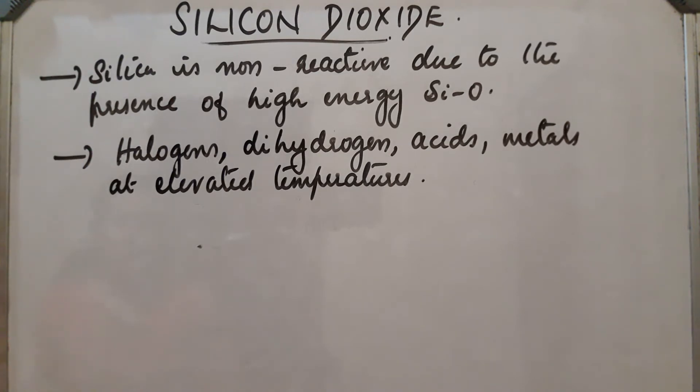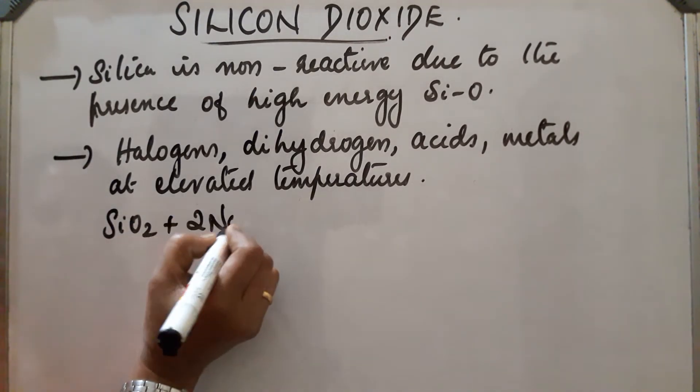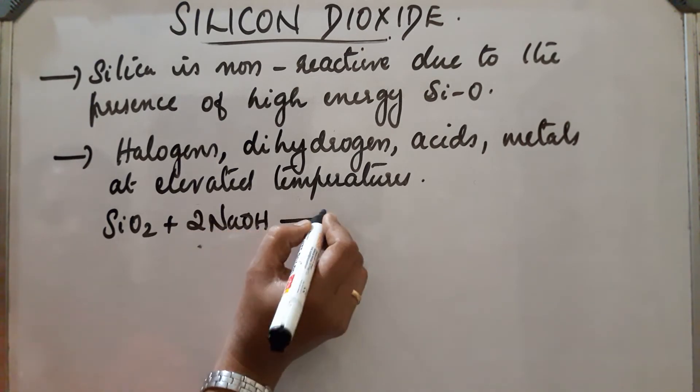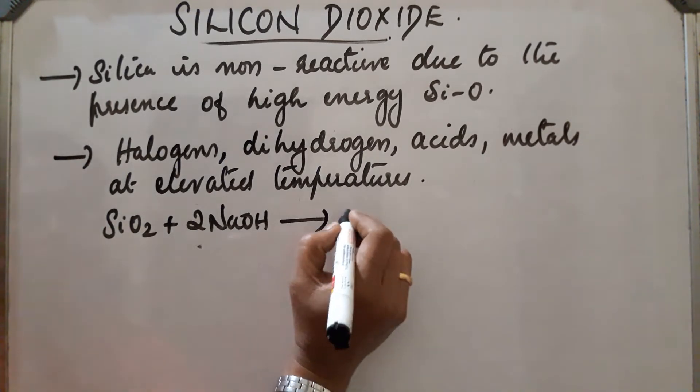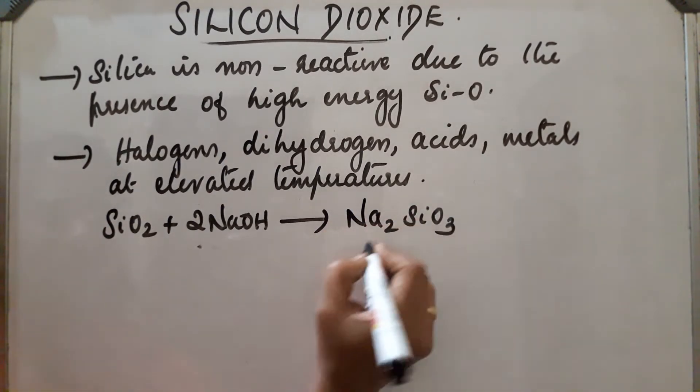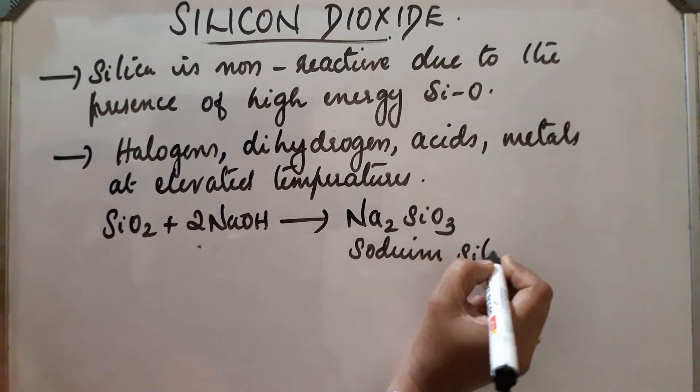But it is attacked by hydrogen fluoride and sodium hydroxide. So the reaction will be: SiO2 on reaction with sodium hydroxide reacts with sodium hydroxide and forms sodium silicate, that is Na2SiO3. Sodium silicate is obtained.